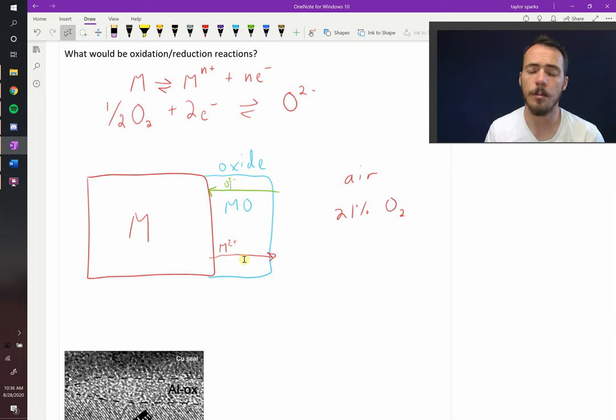Now there's another thing that can happen. We've been assuming that this is completely fully dense, the oxide, but what if it's not fully dense? We actually see that as a pretty common scenario. By the way, oxides form on things all around us. Even when you don't think there's an oxide there, for example, aluminum.